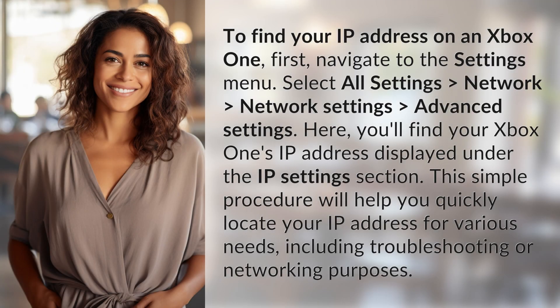To find your IP address on an Xbox One, first navigate to the Settings menu. Select All Settings, then Network, then Network Settings, then Advanced Settings. Here, you'll find your Xbox One's IP address displayed under the IP Settings section.